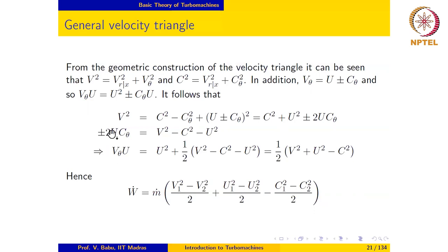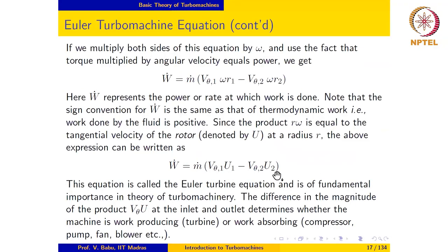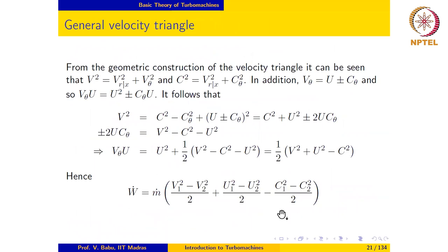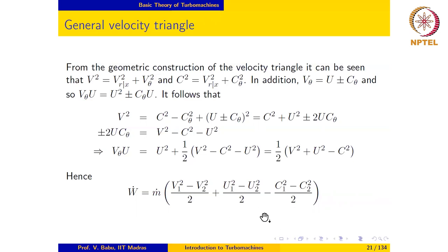Multiplying both sides by U gives V_theta times U equal to U² plus or minus C_theta times U. Furthermore, eliminating Vx² between these two relationships leads to an expression for U times C_theta. Substituting this into the Euler turbine equation, we end up with another form of the Euler turbine equation that involves only absolute velocity, blade velocity, and relative velocity — not their components, but the magnitudes themselves. This involves only flow dynamic quantities: absolute velocity, blade velocity, and relative velocity.